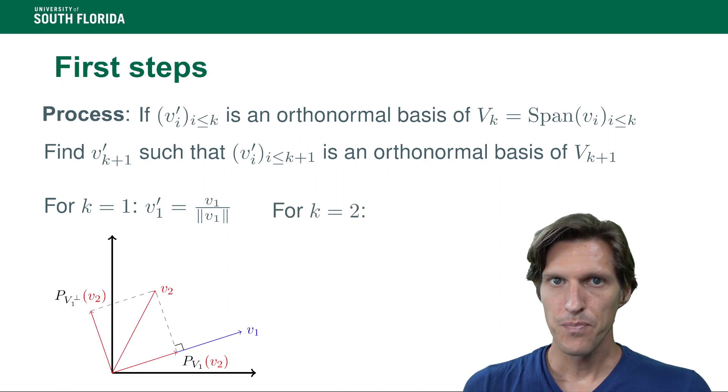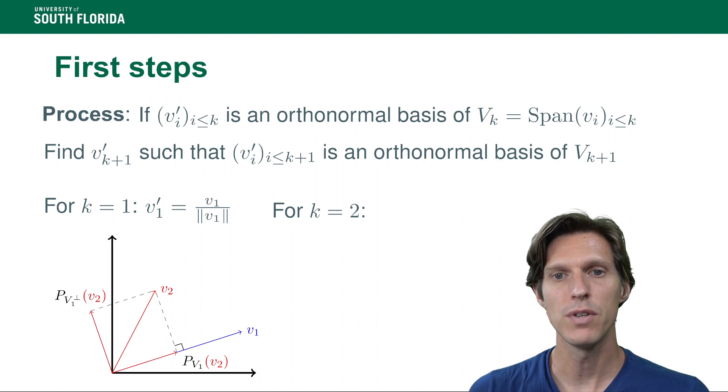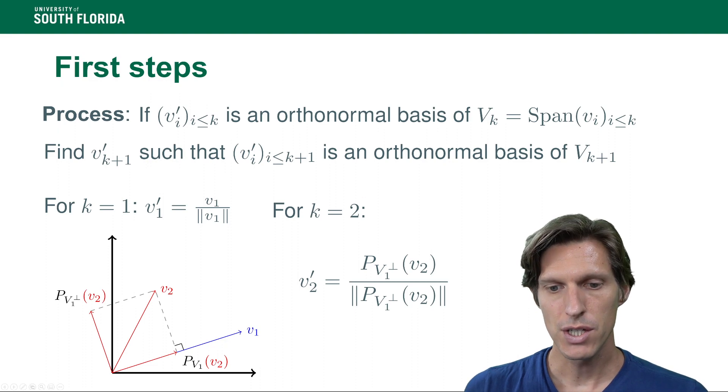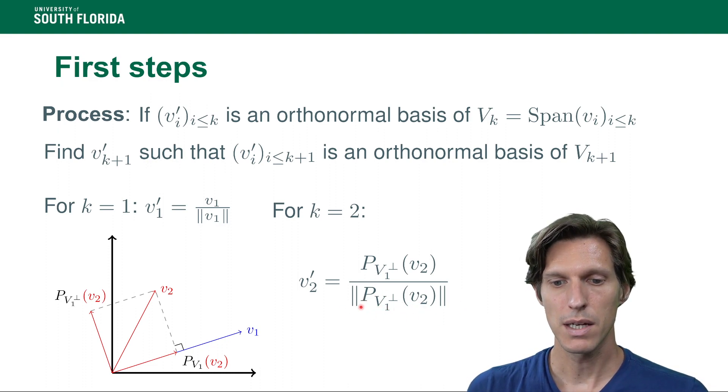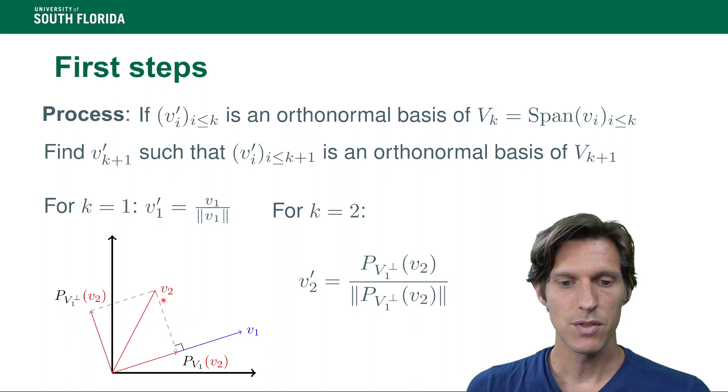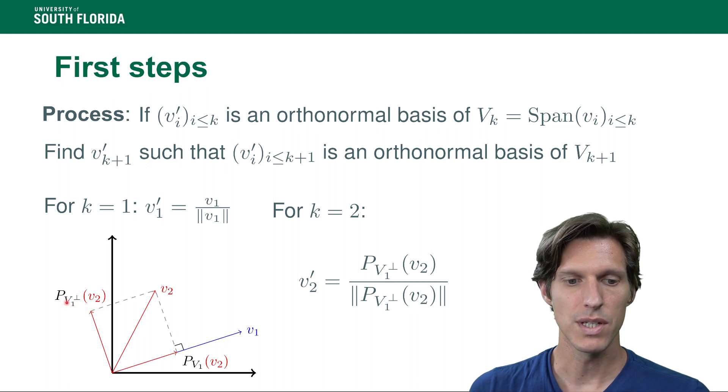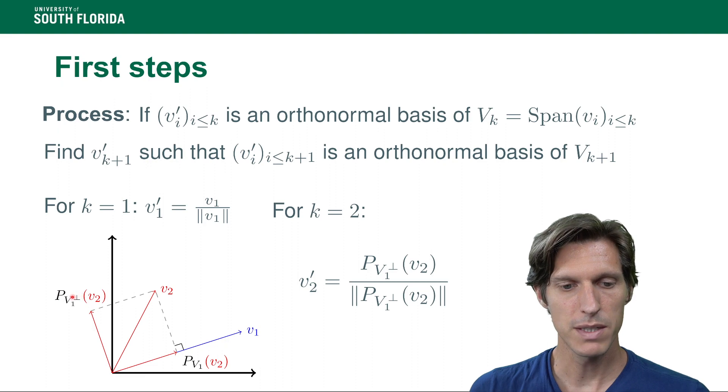Now more complicated, how do we get to when we add another vector? So now we have v₂ and we want to compute v'₂. v'₂ is going to be the projection of v₂ onto the orthogonal complement of V₁, where V₁ is the span of v₁, and then all of that scaled by the norm because we want it to have norm 1. So here we have a visual interpretation: v₂ is projected onto V₁, then we take the projection onto the orthogonal complement and scale it.